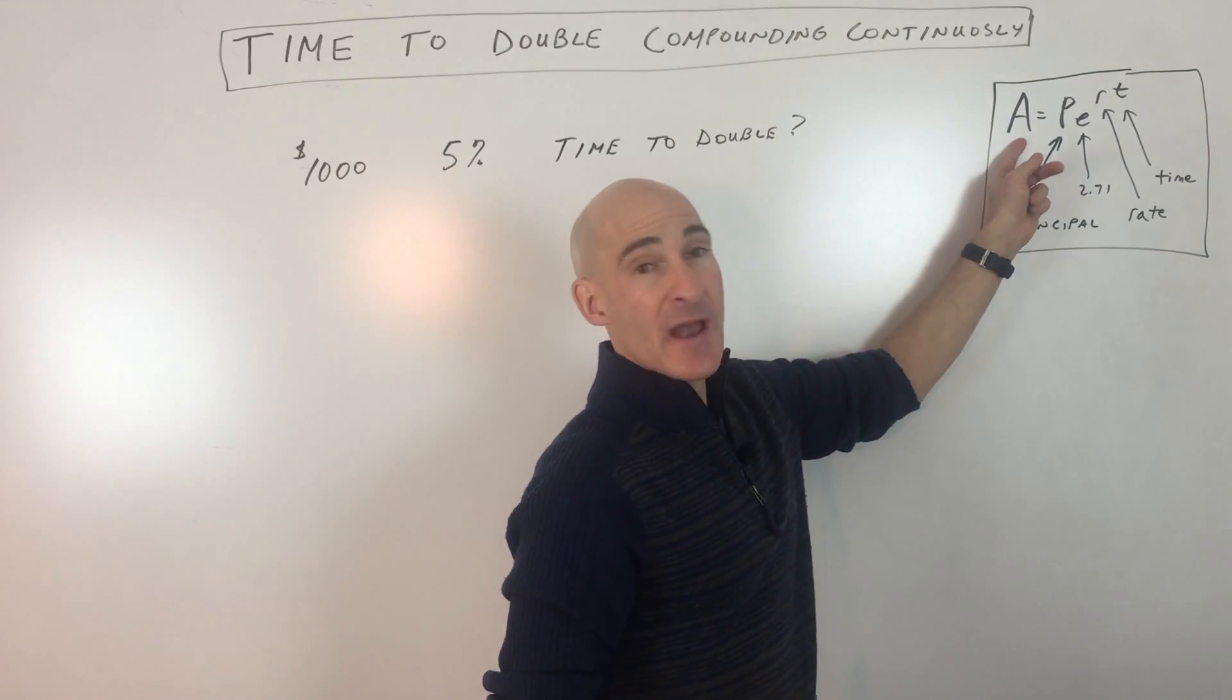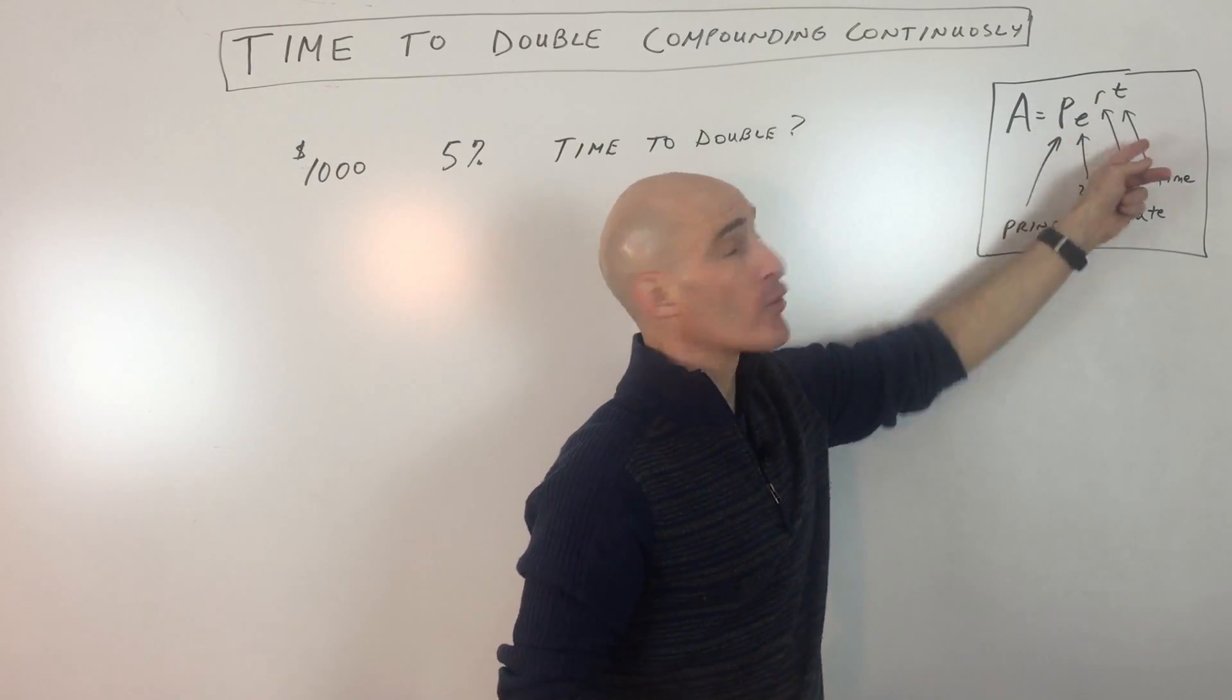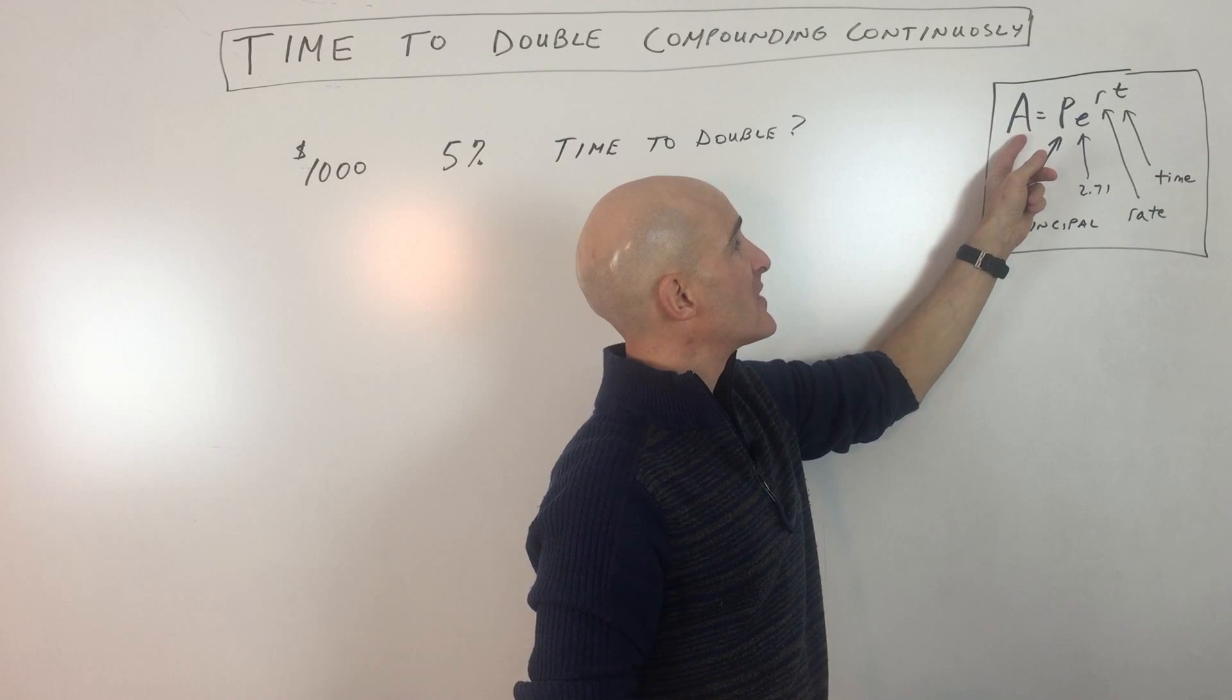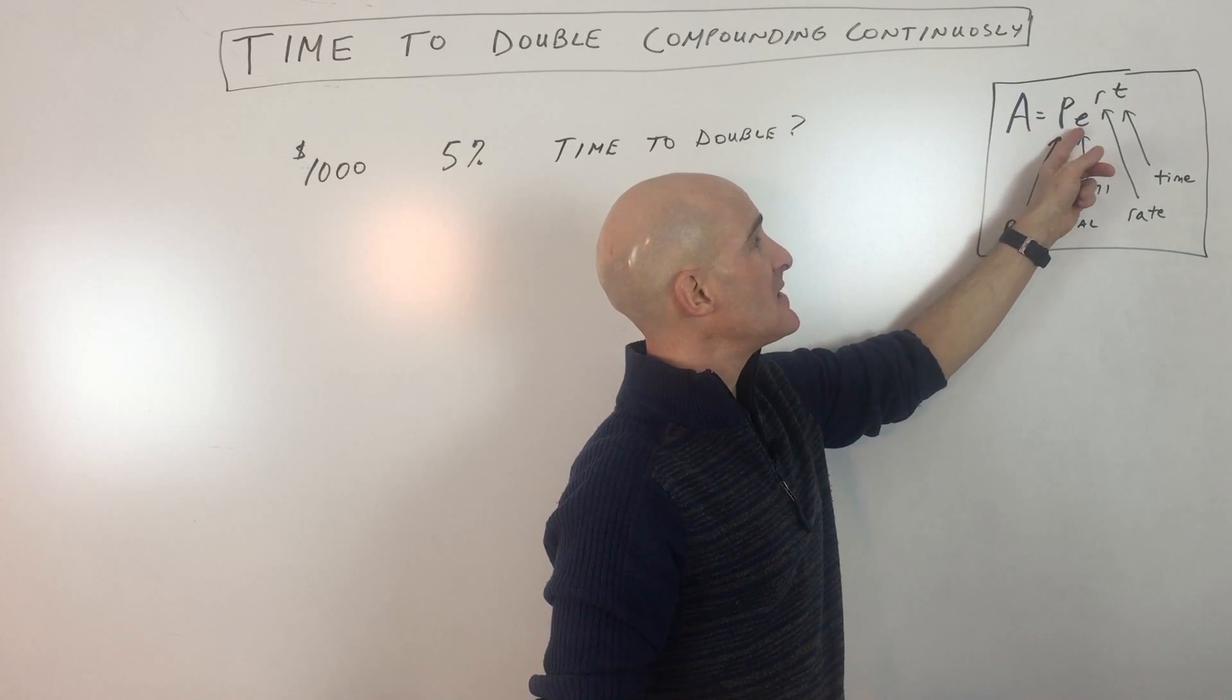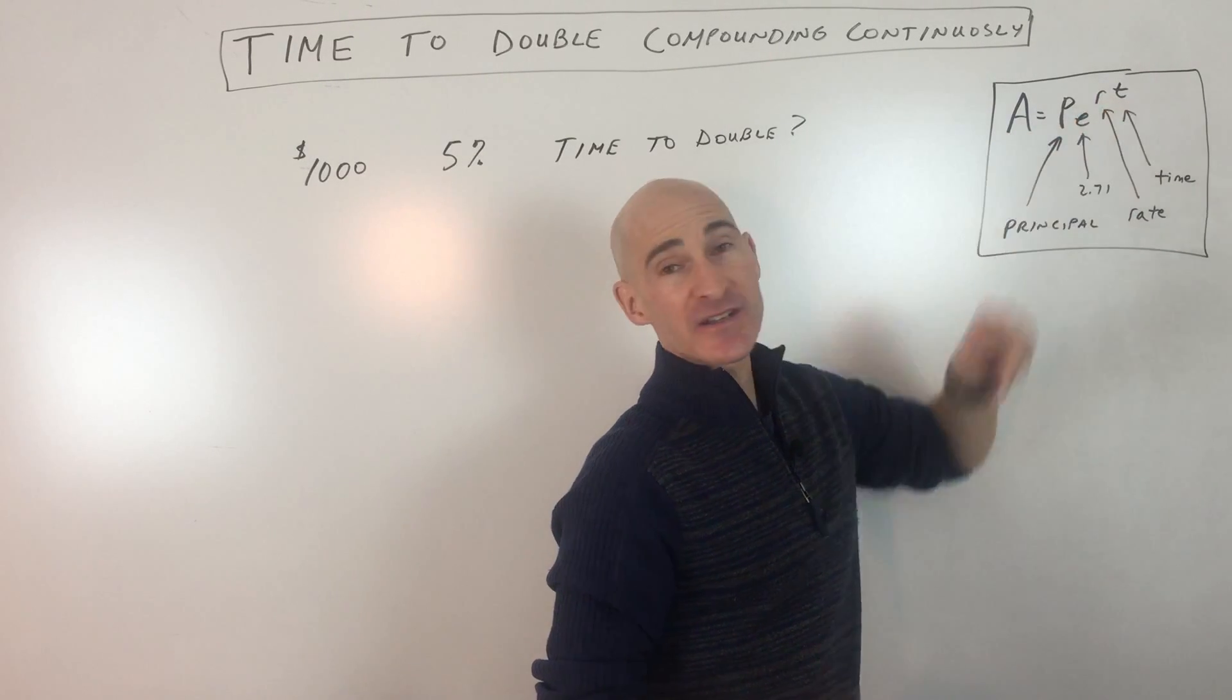The formula you want to know when you're compounding continuously is the PERT formula. It's oftentimes written as A equals PE raised to the RT power.